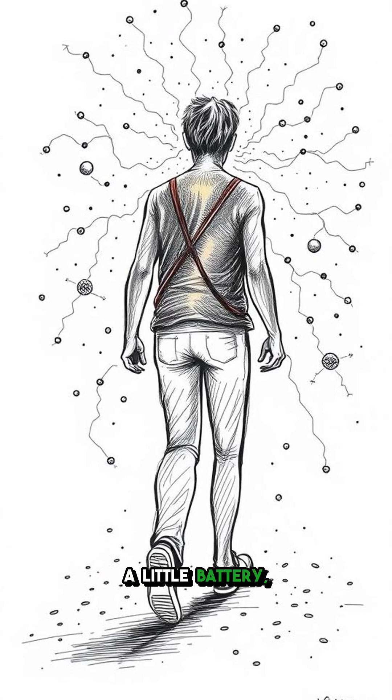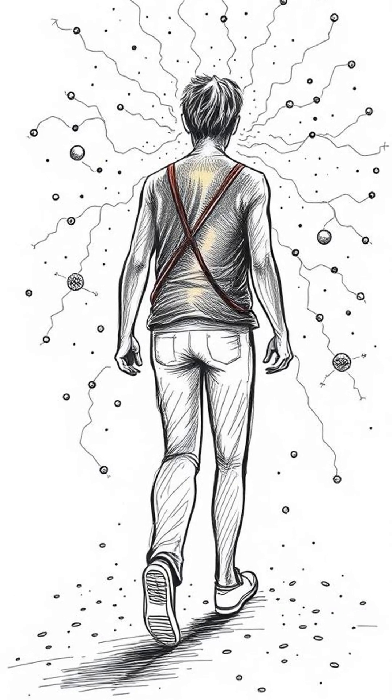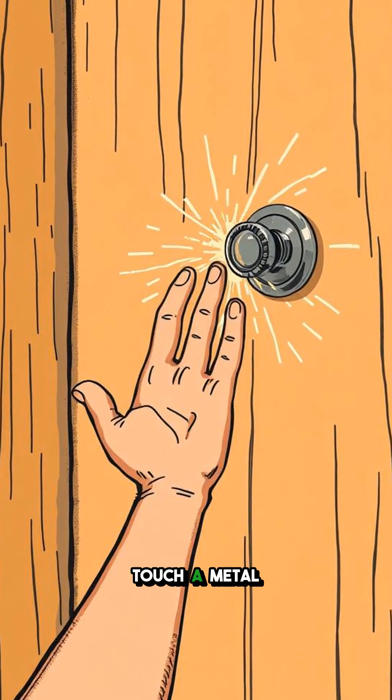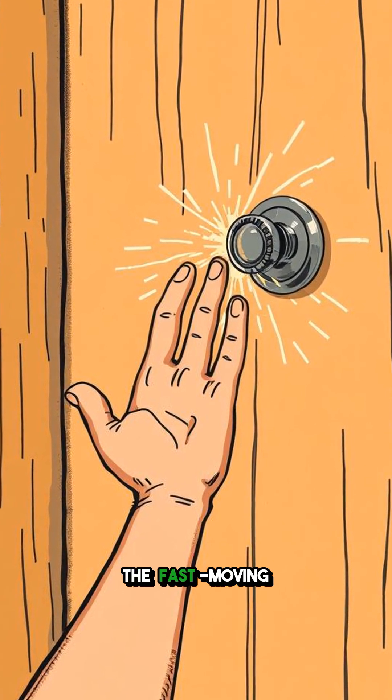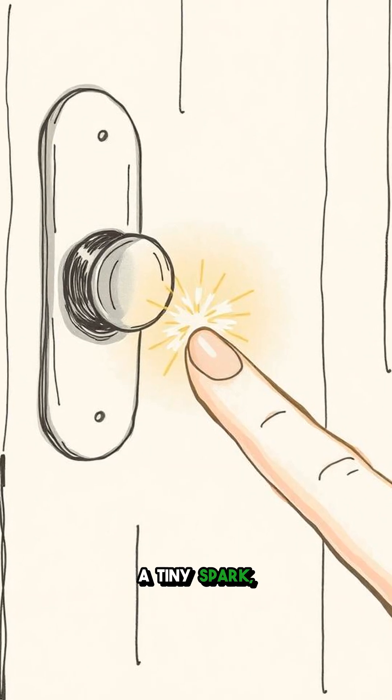Your body becomes a little battery, picking up electrons as you walk around, and then releasing them when you touch a metal object. The fast-moving current heats the air and creates a tiny spark, like a mini lightning bolt.